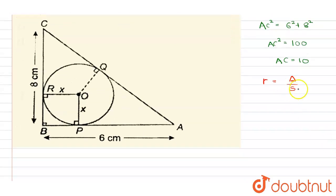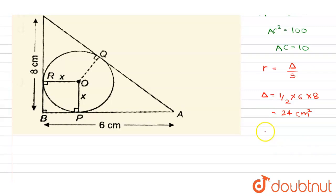Now we need to get delta and semi-perimeter. Delta is the area of triangle. Area of triangle is half into base into height, which is half into 6 into 8. This will be our delta, which is equal to 24 cm square. And semi-perimeter will be the addition of all sides divided by 2, which is 6 plus 8 plus 10 divided by 2, which is equal to 12 cm.